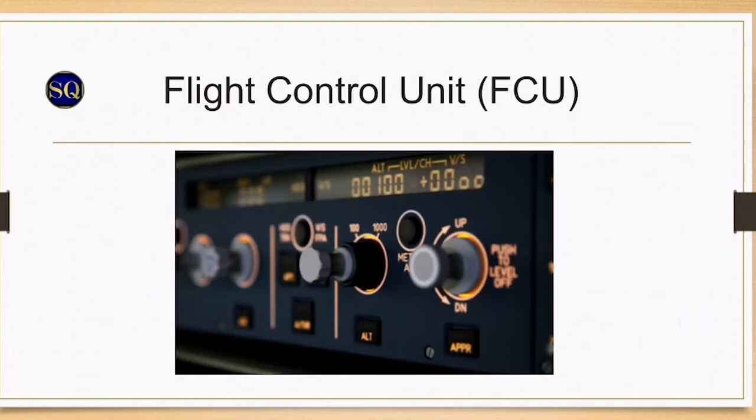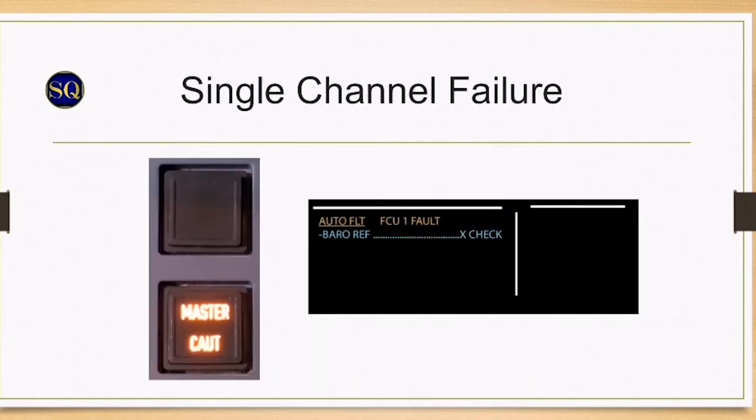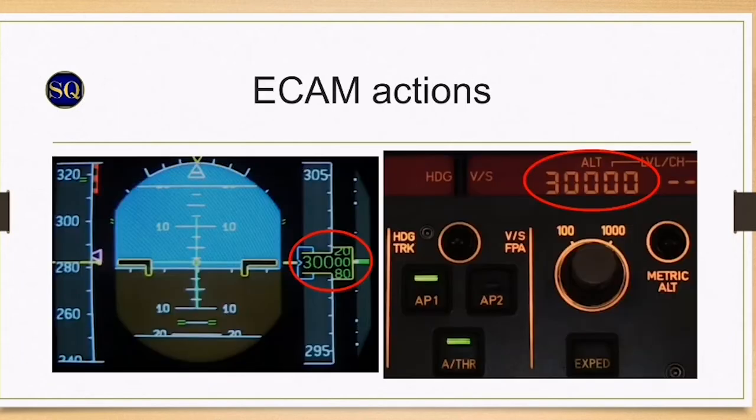Flight Control Unit or FCU has two channels. If one channel fails, the other channel takes over automatically. The ECAM gives a master caution and displays as below. In this case, channel 1 has failed. Cross-check the barometer settings and altitude indications on the PFD against the FCU.